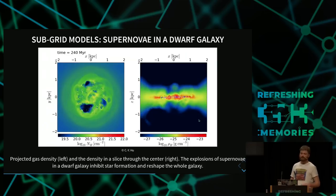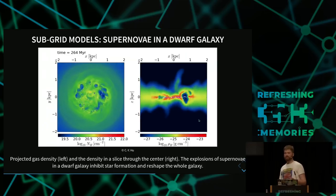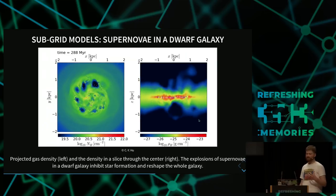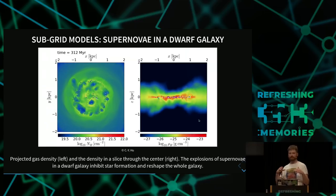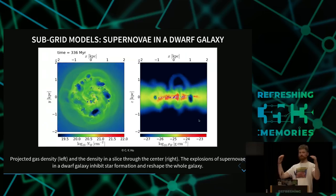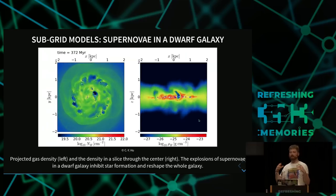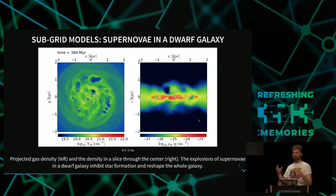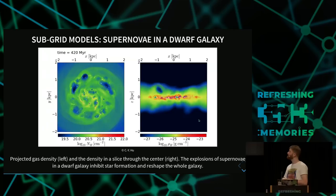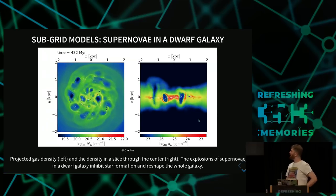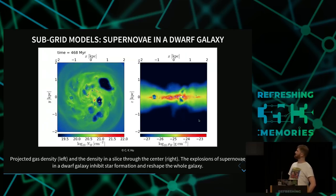How supernova feedback looks is shown in this video run by Chayu Hu from MPA — a face-on density map of a dwarf galaxy and a cut through this galaxy. We see stars forming and then exploding and forming these low-density bubbles as they drive out the gas. This is most important in small galaxies and dwarf galaxies because they're not massive enough to keep all the gas in — the gravitational potential is weak enough that supernovas can really reshape this galaxy.